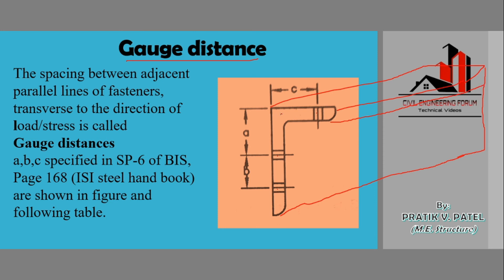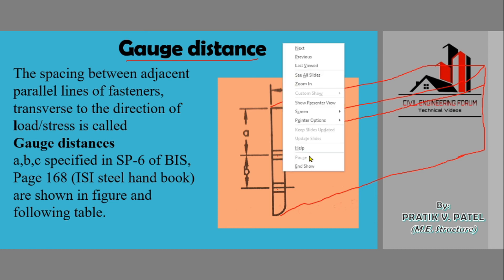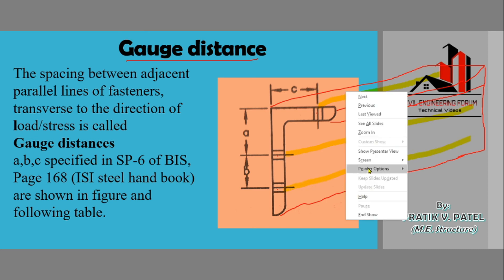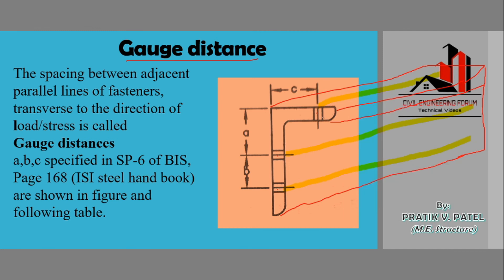Considering the leg of the L-section with bolt holes, the distances between the parallel lines of bolt holes are called gauge distances — labeled a, b, and c. Here we have three parallel lines, and the center-to-center distances between them give us the gauge distances a, b, and c.